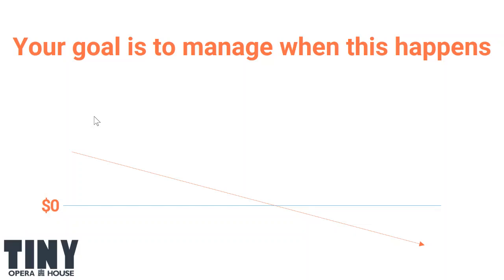Does that graph even make sense? Budgets should always roughly balance — the money we think is going to happen in June next year versus the expenses we think are going to happen in June should be roughly the same. Cash flow, on the other hand, in 95% of organizations, if you ran a cash flow, they're going to be out of money by June. Everyone is almost out of money. That's normal, even for for-profit businesses.